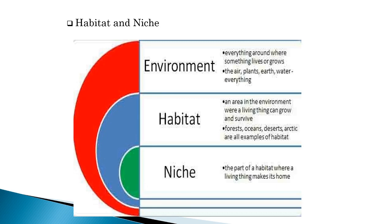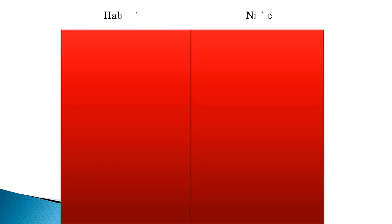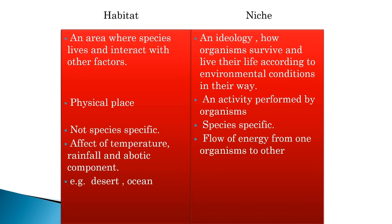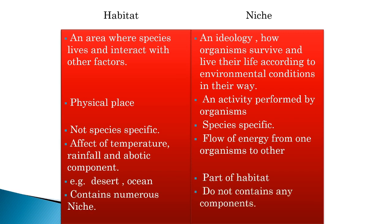The environment is everything that surrounds where something lives or grows — the air, plants, earth, water, everything. The difference between habitat and niche: habitat is a physical space while the niche is an activity performed by the organism. Habitat is not species-specific, but the niche is species-specific. Habitat is influenced by temperature, rainfall, and biotic components, but the niche shows a flow of energy from one organism to another. For example, desert and ocean are habitat examples, and a niche is a part of the habitat.